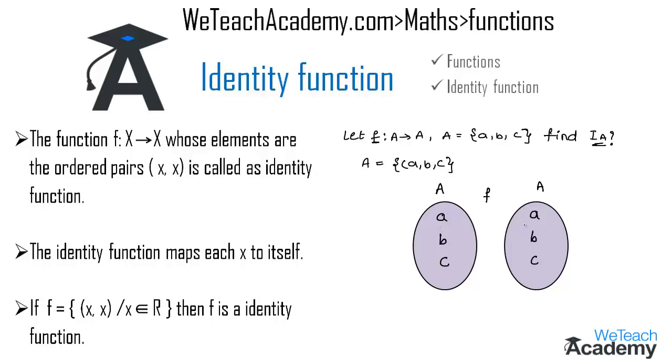Now let us map a with a, b with b, and c with c. So we get the ordered pairs of the identity function IA as (a, a), (b, b), and (c, c).